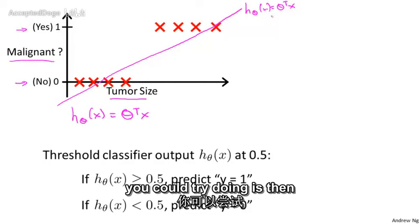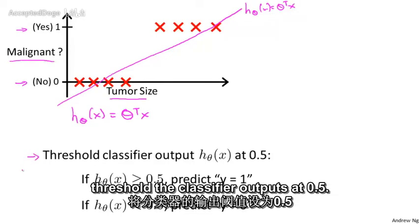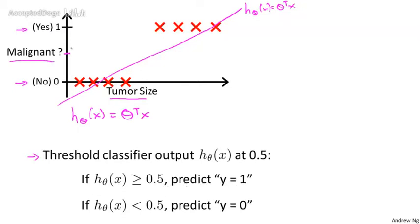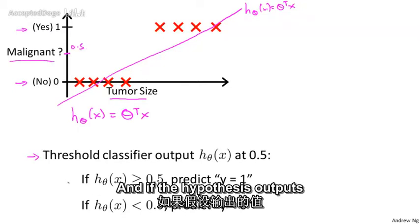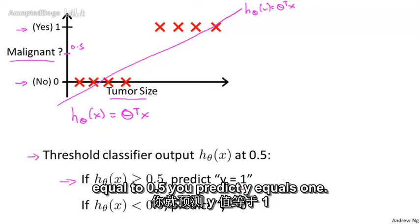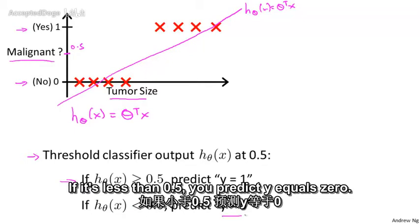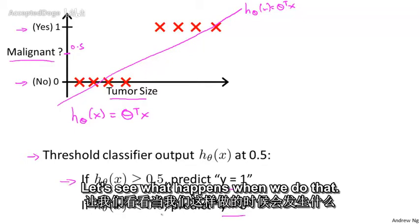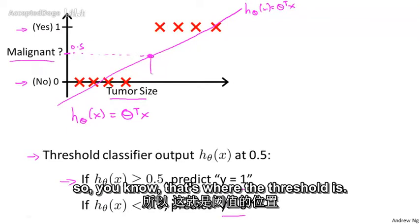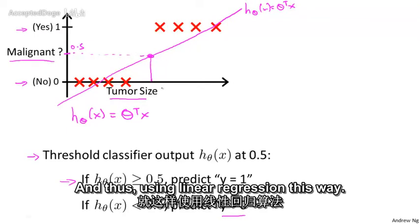And if the hypothesis outputs a value that is greater than or equal to 0.5, you predict y equals 1. If it's less than 0.5, you predict y equals 0. Let's see what happens when we do that. So let's take 0.5 and that's where the threshold is.